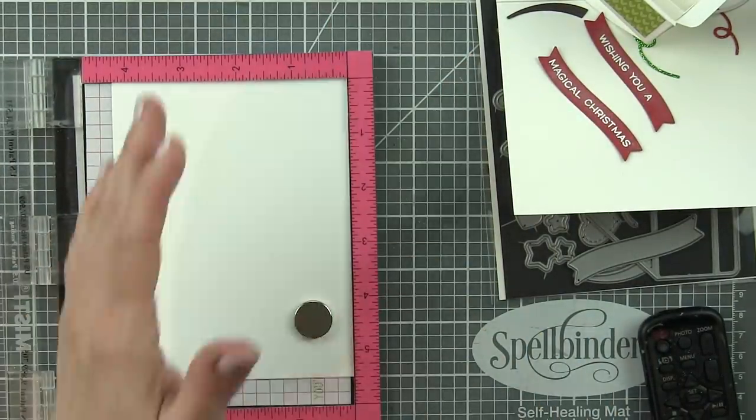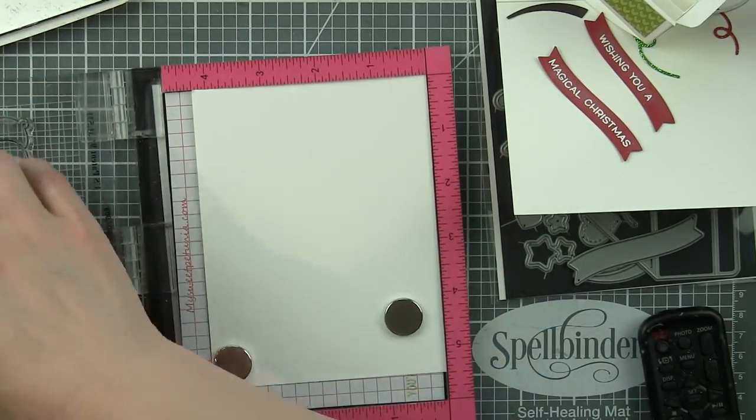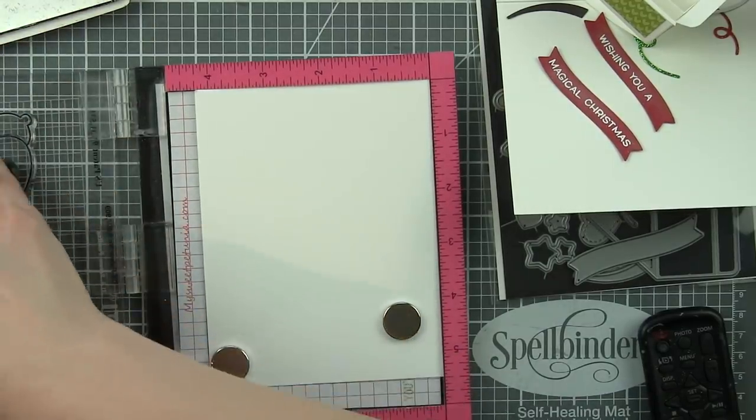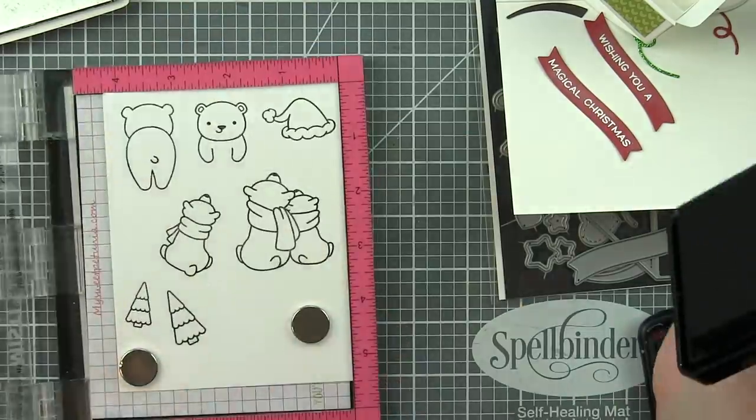So we've got our banners. We've kind of got our die cut pieces. Off camera, I die cut from green and red sparkle cardstock paper the little confetti that's going to come up out of the box. And I'm just going to set that stuff aside while I stamp my images.